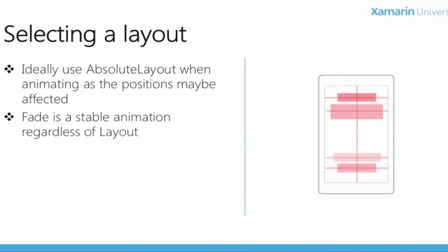One of the trickier parts of using the animation system is ensuring that items are laid out correctly. Using layouts like StackLayout or RelativeLayout can make positions difficult to calculate, especially for LayoutTo operations. In these cases, using AbsoluteLayout provides the best experience for animations, especially the RotateTo and LayoutTo varieties. In fact, FadeTo is probably the easiest animation to implement since the control's position does not change regardless of the layout.